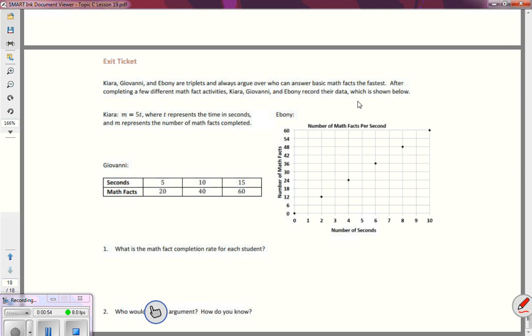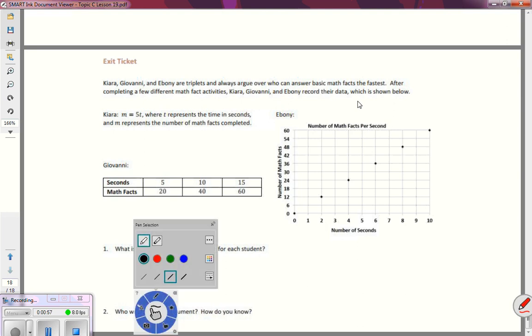So I have my triplets and my triplets have their data shown in three different formats. Chiara has her set up in an equation where T represents a time in seconds and M represents the number of math facts completed.